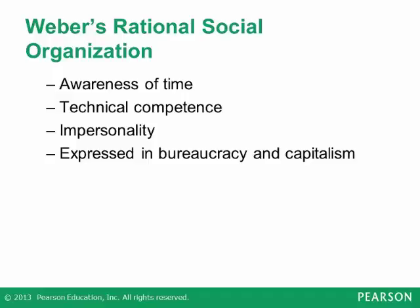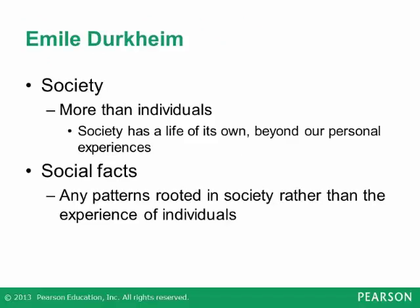Modern society rests far less on moral consensus and far more on functional interdependence — what we might call the Durkheim's dilemma. The technological power and greater personal freedom of modern society come at the cost of declining morality and the risk of anomie. Like Marx and Weber, Durkheim worried about the direction society was taking, but of the three, Durkheim was the most optimistic. He saw that large, anonymous societies gave people more freedom and privacy than small towns. He hoped we would be able to create laws and other norms to regulate our behavior.